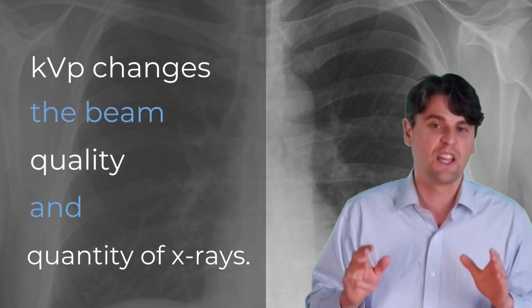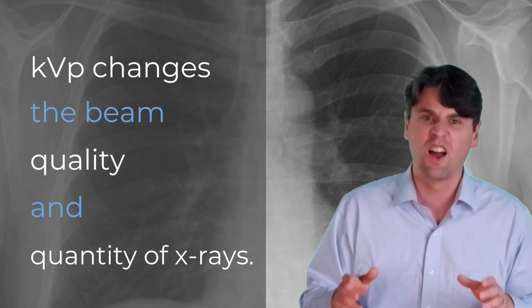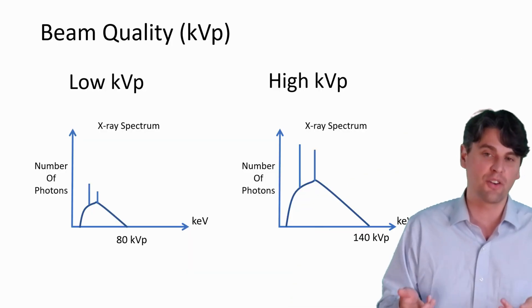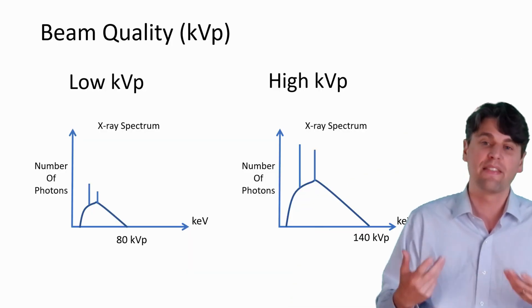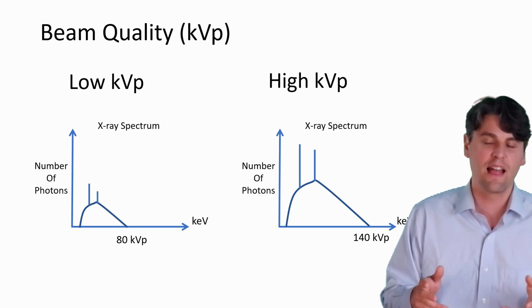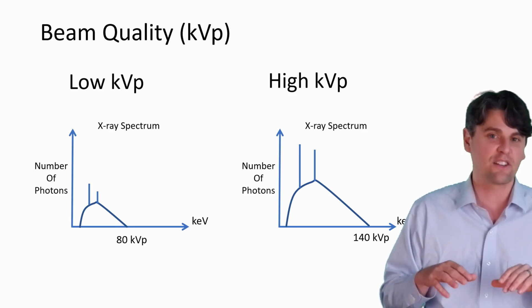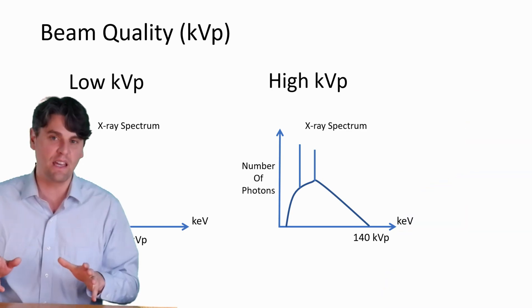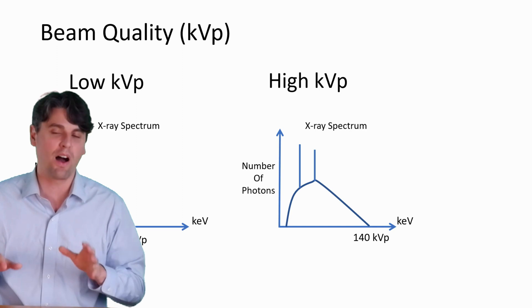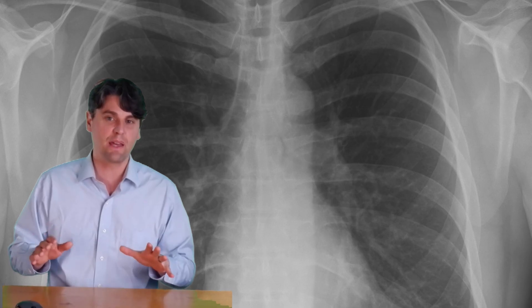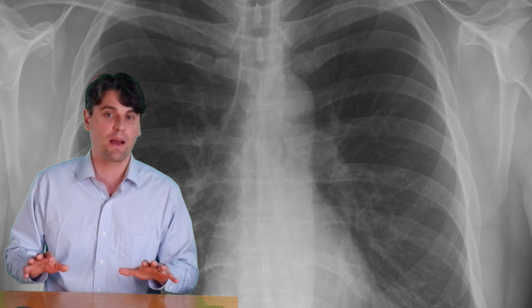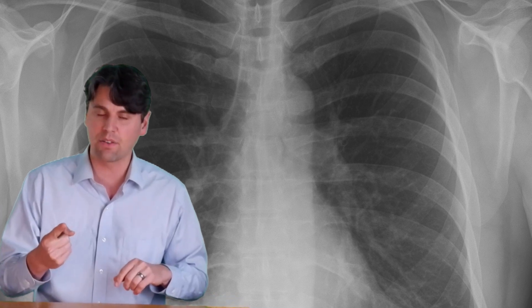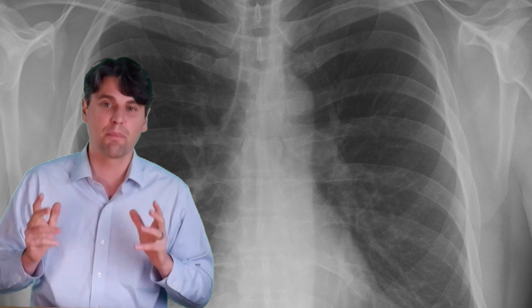And when you change KVP, you're changing both the quality and also the quantity. So the number of x-rays or the area under the curve in the x-ray spectrum, that's what we call the quantity or the number of x-rays. And the quality is actually the shape of the x-ray spectrum. Go to higher KVP, you're changing the shape of your x-ray spectrum. Change the KVP alone without changing any other parameters, you're actually going to end up with higher quantity of x-rays and also a different beam quality.